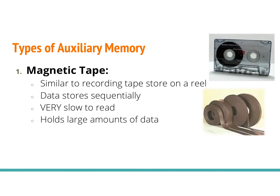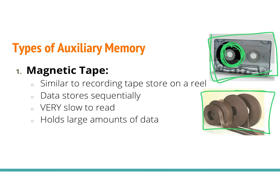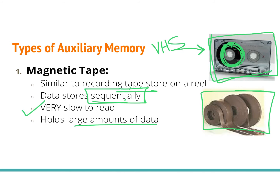The first type of auxiliary memory is called magnetic tape, which is similar to recording tape on a reel — like a cassette tape or VHS tape, where things are stored sequentially. They're stored in order and you have to rewind back to the beginning if you want to start from there — you can't just jump back. These are very slow to read, but they can hold fairly large amounts of data. The slowness and sequential storage was pretty inconvenient, so people started looking for other ways to store information.